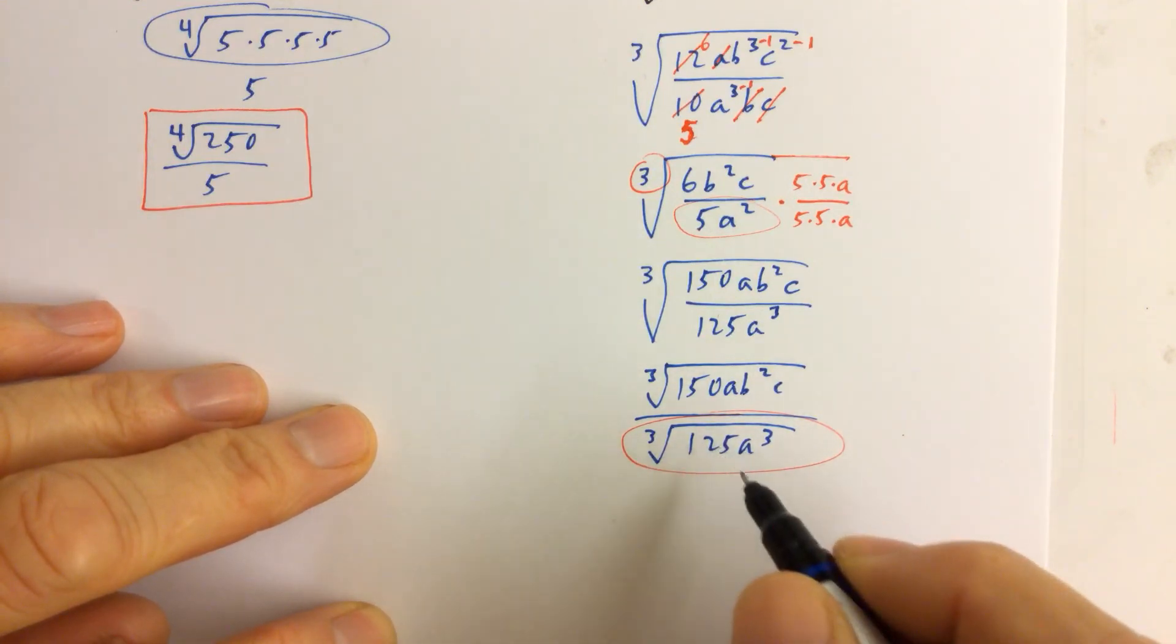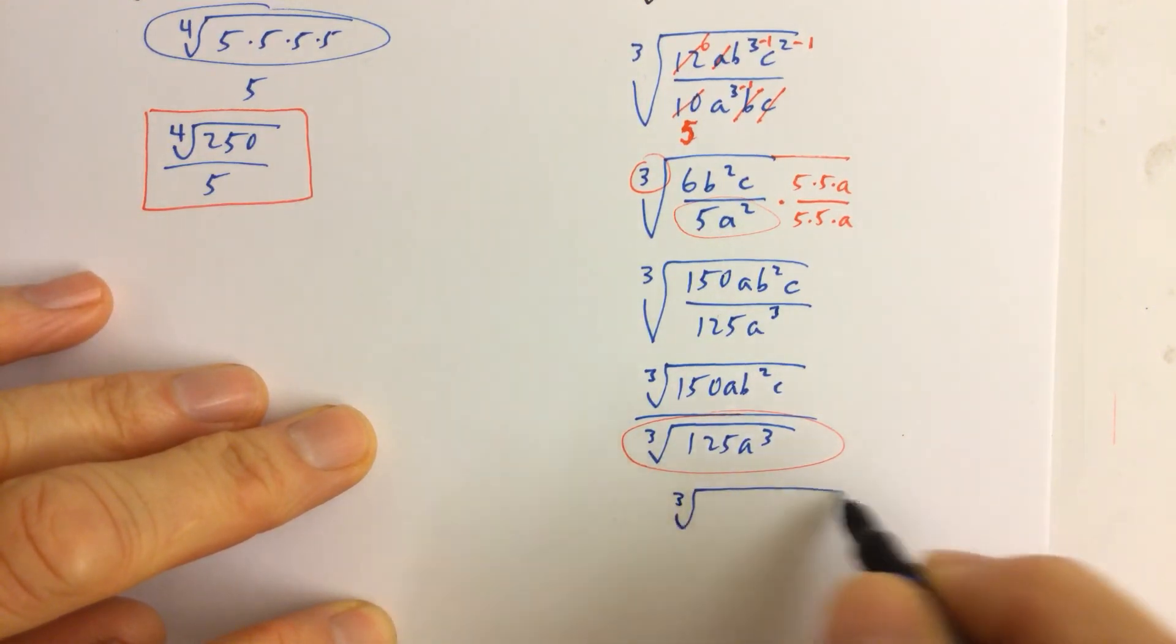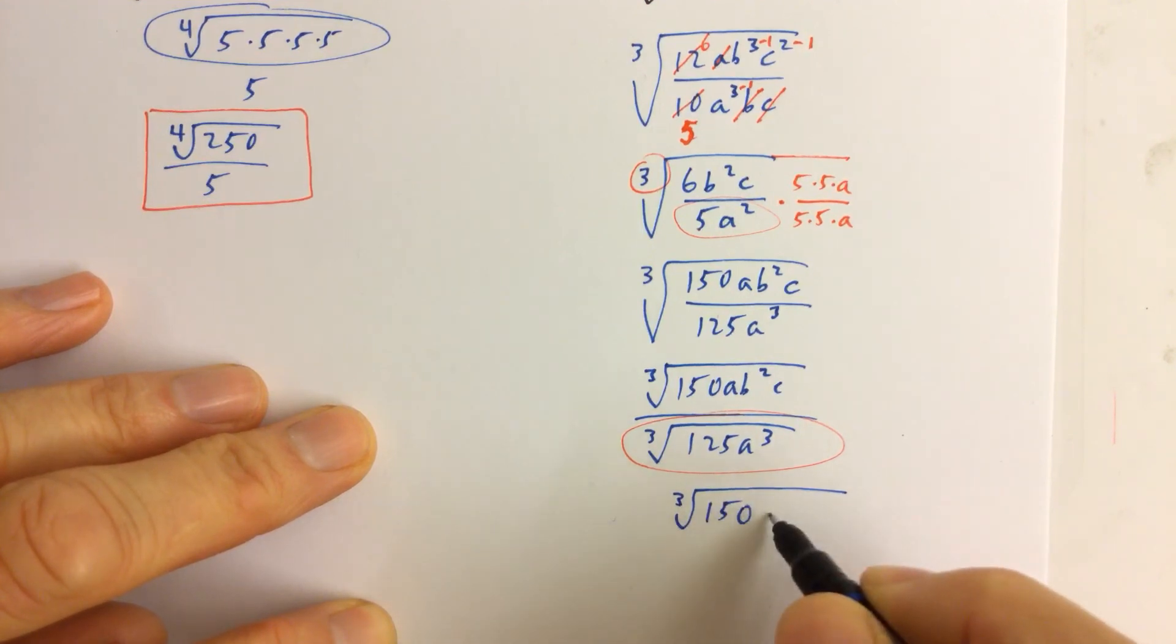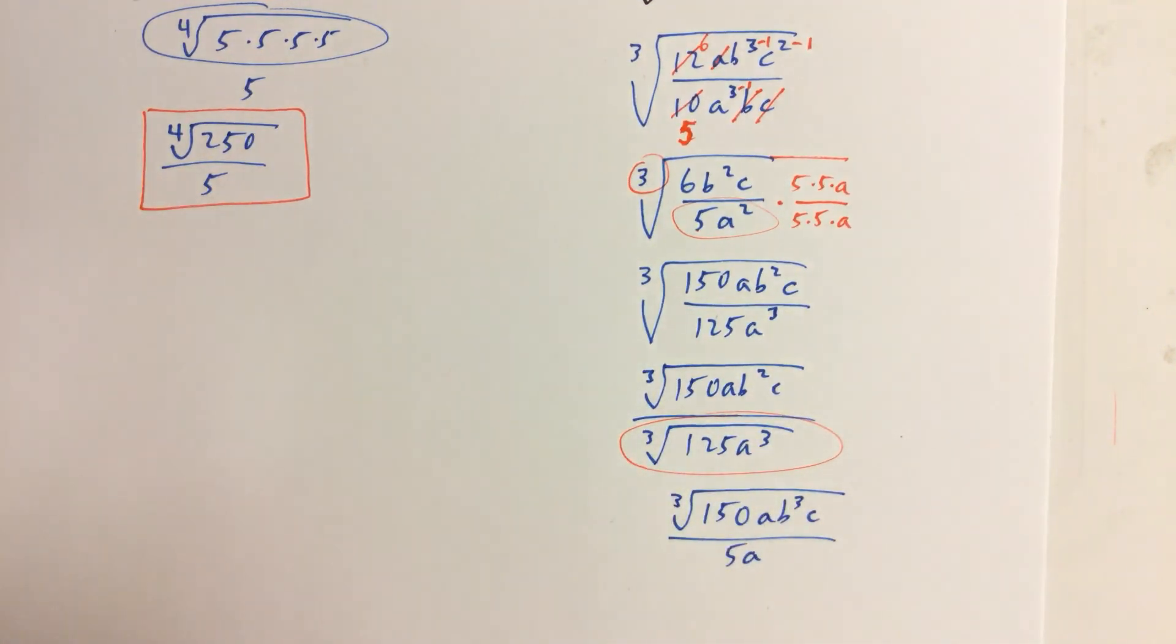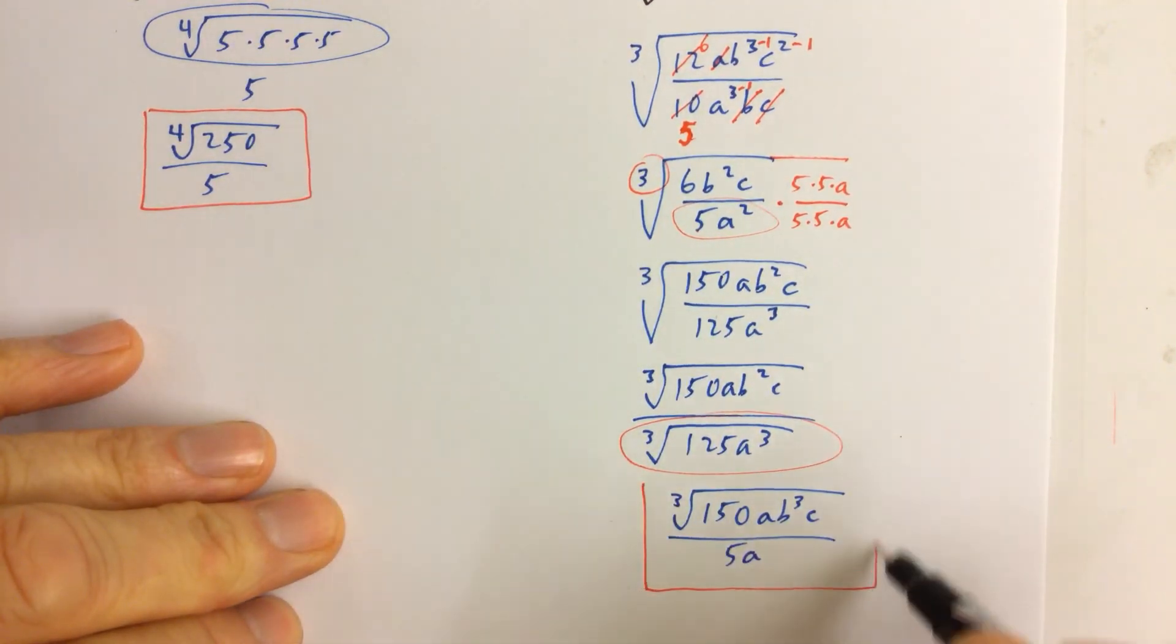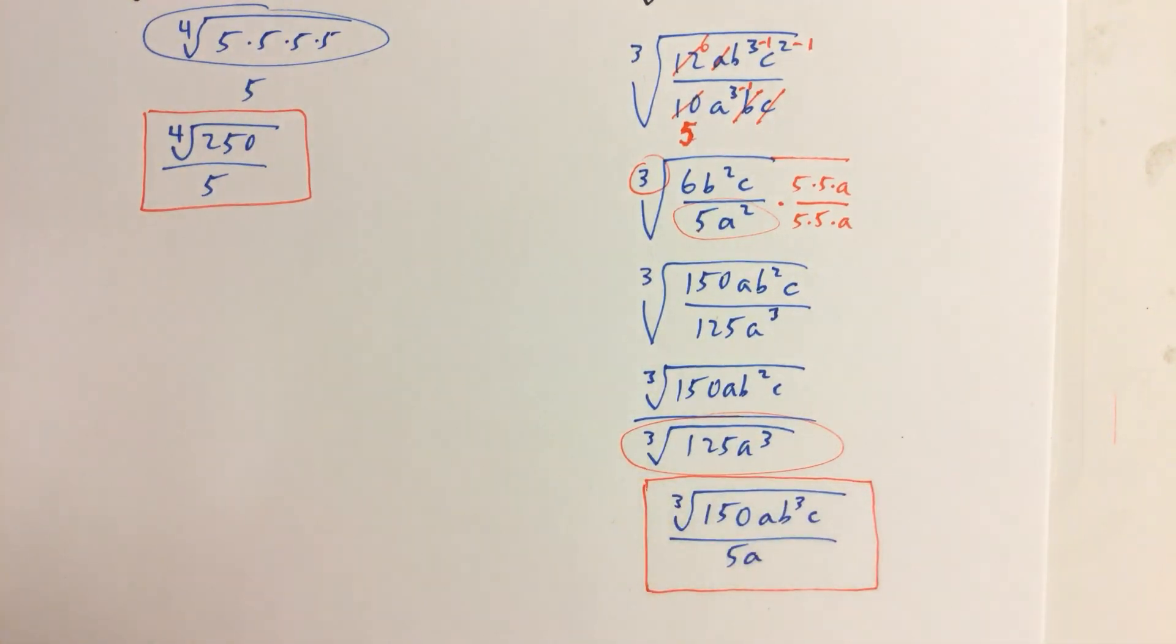a perfect cube root, the cube root of 125. Let's rewrite the numerator first, actually. The cube root of 125 is 5, and the cube root of a cubed is a. And so that is our simplified version of the original problem.